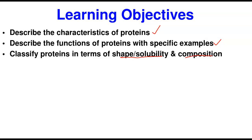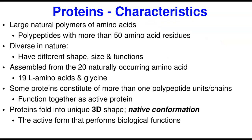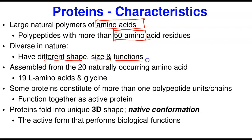Proteins are defined as large natural polymers of amino acids. They are polypeptides with more than 50 amino acid residues. Proteins are diverse in nature — they have different shapes, different sizes, and different functions. Proteins are assembled from the 20 naturally occurring amino acids, which are the 19 L-amino acids and glycine.